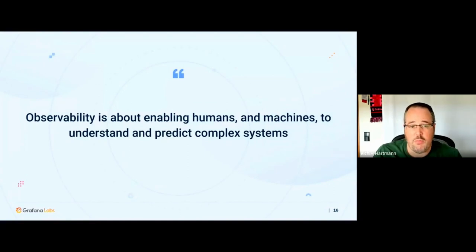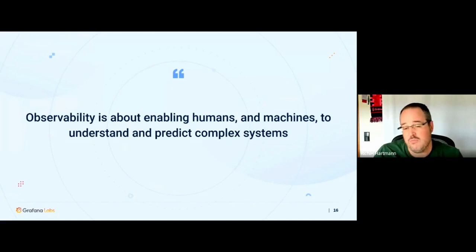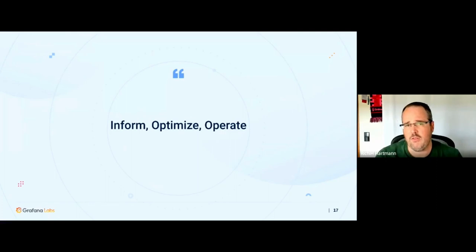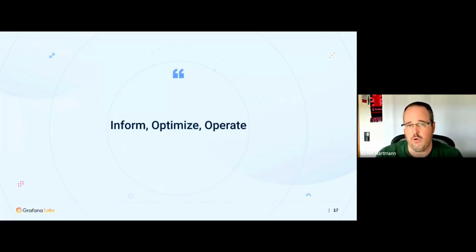At a very basic level, observability is about enabling humans and machines to understand and predict complex systems. Why machines? A lot of this is pretty close to AI/ML — not absolutely there, but a lot of the properties are the same — which again goes into this inform, optimize, operate cycle. Oftentimes if you have different fields, everyone has fundamentally the same needs. But when they come up with concepts and solutions — sometimes literally the same ones — there are different names and terms for the same thing.